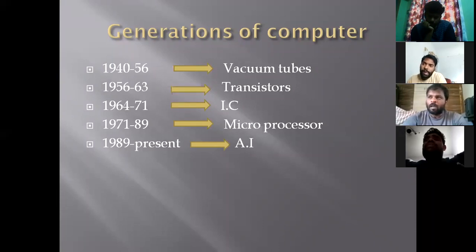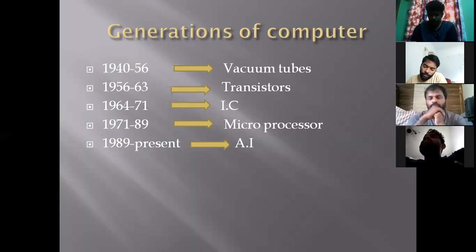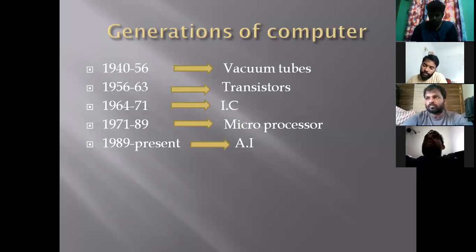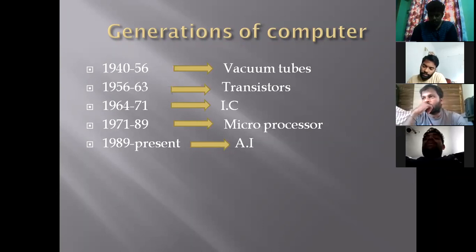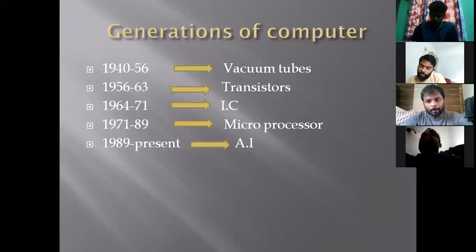In the fourth generation, from 1971 to 1989, the microprocessor was introduced. The microprocessor was implemented as a silicon chip — notably by Intel. Millions of ICs were integrated into a single microprocessor chip.